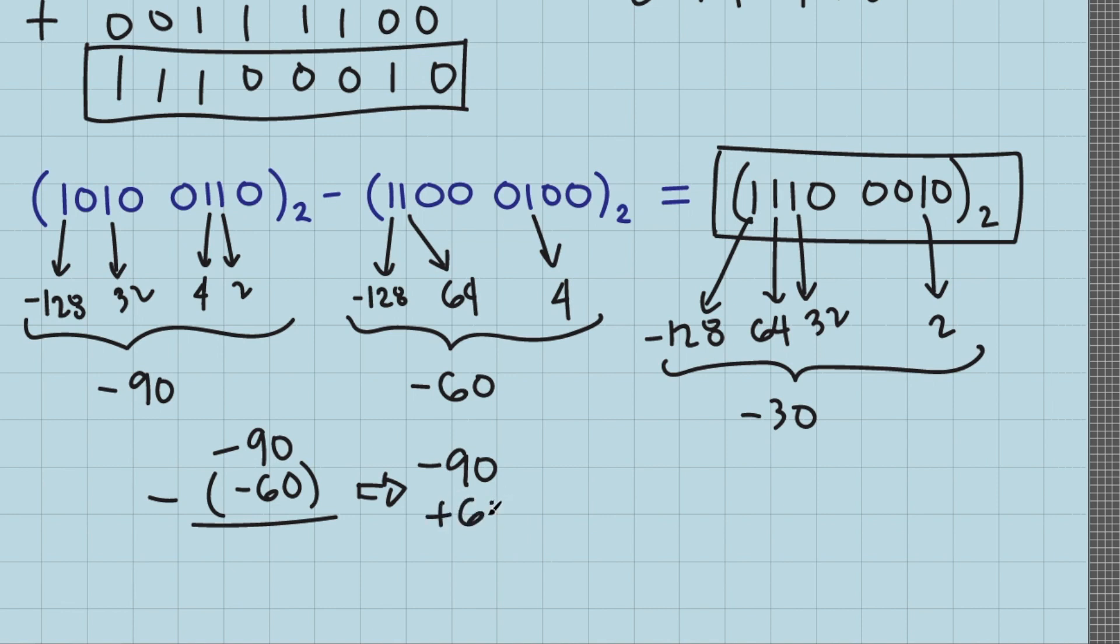So if we calculate negative 90 minus negative 60, this becomes negative 90 plus 60, we end up with negative 30. So our final answer is correct.